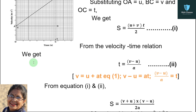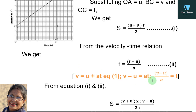From the velocity-time relation, we already proved V equals U plus AT, so rearranging: V minus U equals AT, and therefore T equals (V minus U) upon A. This is equation 2. Rearranging step-by-step: V minus U equals AT, then bringing A under gives T equals (V minus U) divided by A.